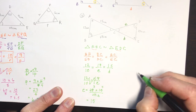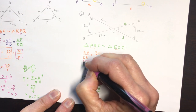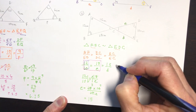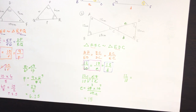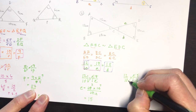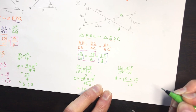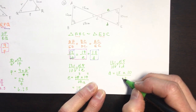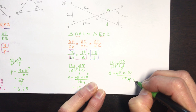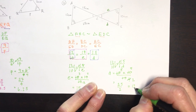For the second unknown, I'll use the original known ratio again — always use the ratio you started with, not a solved value, to avoid compounding errors. So 12 over 10 equals 15 over d. Using the N-method: d equals 15 times 10 divided by 12. Dividing 3 into 12 and 15, then 2 into 4 and 10, gives 25/2, which equals 12.5.